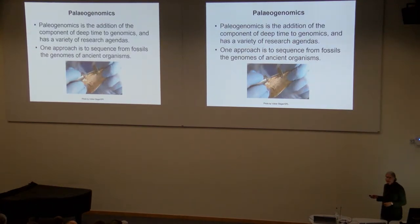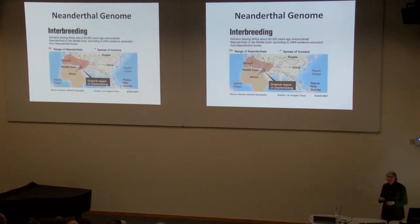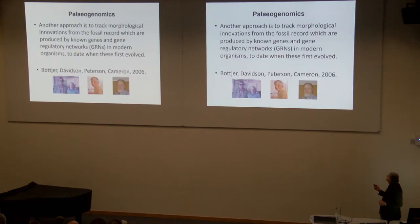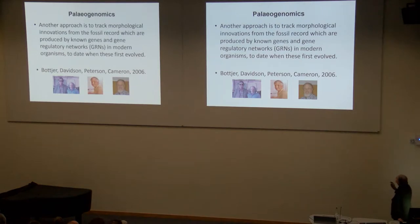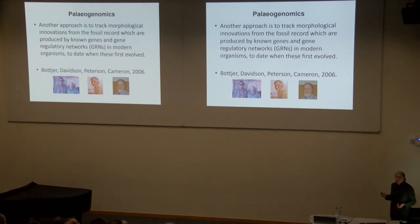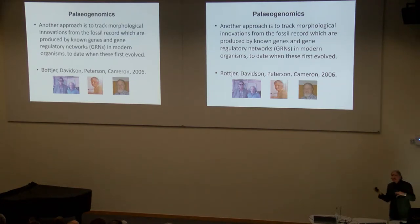A great example is the Neanderthal-Homo sapiens mixing that we have learned about. I'm not going to talk about that kind of paleogenomics today. What I want to talk about is another definition: looking at morphological innovations from the fossil record and then looking at known genes or gene regulatory networks in modern organisms to try and date when these GRNs first appeared.